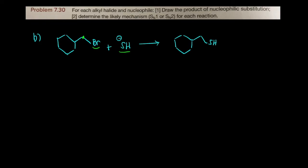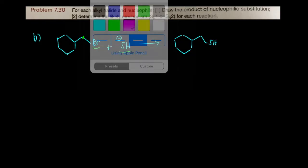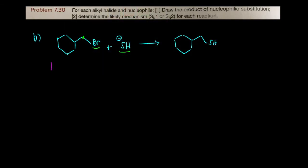We have a thiol functional group there. Now we want to determine if this is going to be SN1 or SN2. What you'll notice is that the starting molecule is a primary alkyl halide, and primary alkyl halides only react through SN2 reaction mechanisms. We have a strong nucleophile, so that also suggests the reaction is SN2.